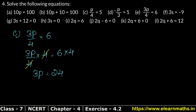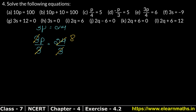Now 3 is multiplied with p, so we divide both sides by 3. We get 3p divided by 3, and 24 also divided by 3. The 3s cancel on the left. On the right, 3 times 8 is 24, so p equals 8 is the answer.